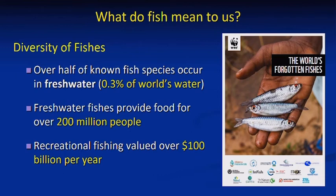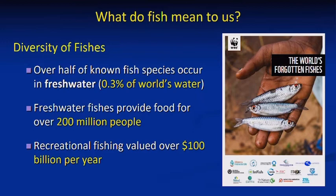Speaking more broadly about what fish mean to us — focusing on freshwater fishes — there are over 35,000 species freshwater and marine combined. It's impossible for any one person to know all those species, which is why we need diverse voices for diverse fishes. Over half the known fish species are in a very small amount of the planet's water, and freshwater fish are important as food for over 200 million people. The recreational fishery is also highly valuable. I encourage you to look at WWF's report, The World's Forgotten Fishes.